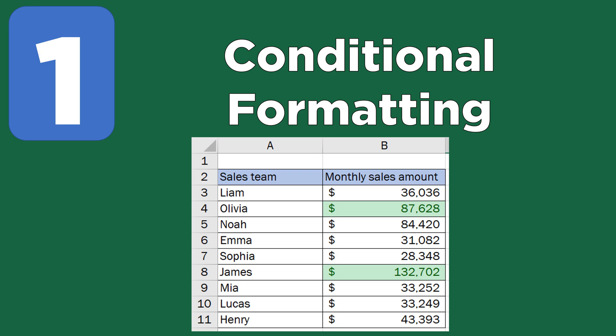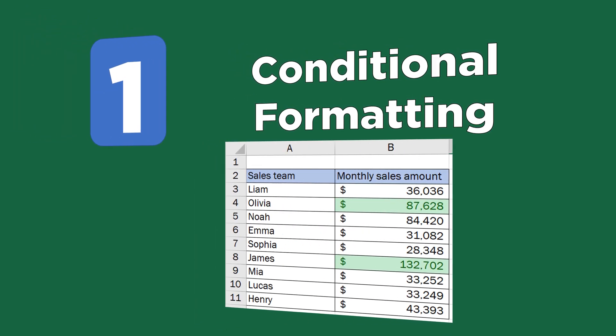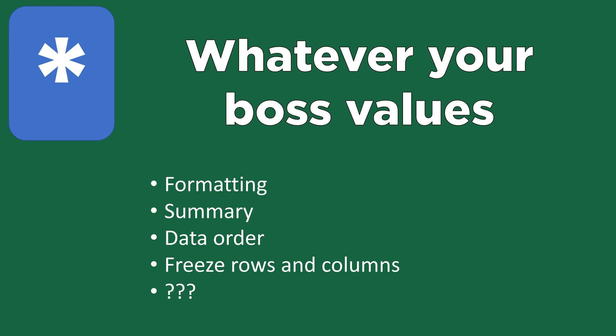The bonus skill applies to almost anyone in the workforce: learn what your boss values. Your boss may care about formatting, data summaries, column order, freezing the top row — whatever it is, figure it out. If you give your boss a spreadsheet and it takes them 30 minutes to get it looking right before passing it on, learn what they're doing and do it for them. They'll appreciate it and it will make you look better in their eyes. This isn't just Excel advice — it's general work advice: always understand what your boss values and try to deliver that, whether you agree with it or not. That focus is what makes you a true Excel professional.